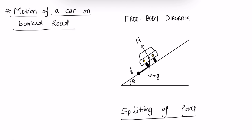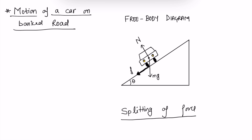Hello students, welcome to our channel Physics Genics. In this video we will learn about motion of a car on a banked road. A banked road means that whenever you have a road which is a horizontal surface, it is inclined from some angle to some angle. We call this road a banked road.